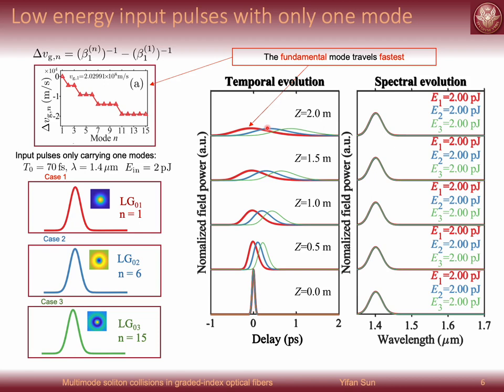This is obvious because the group velocity of those modes are the inverse value of the beta1. So now the question is, if we increase the input energy, what is the situation for the single-mode soliton?